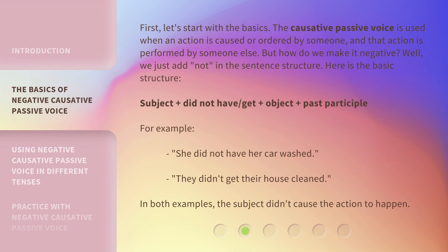First, let's start with the basics. The causative passive voice is used when an action is caused or ordered by someone, and that action is performed by someone else. But how do we make it negative? Well, we just add 'not' in the sentence structure. Here is the basic structure: Subject plus 'did not have' or 'get' plus object plus past participle. For example, 'She did not have her car washed.' 'They didn't get their house cleaned.' In both examples, the subject didn't cause the action to happen.